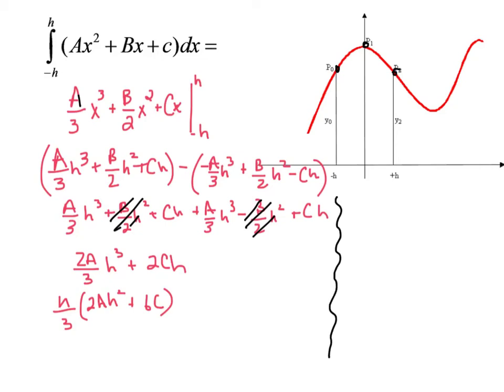Well, if we're going to try and set up a parabola, we've got ax squared plus bx plus c, and we're going to plug in negative h, 0, and h.